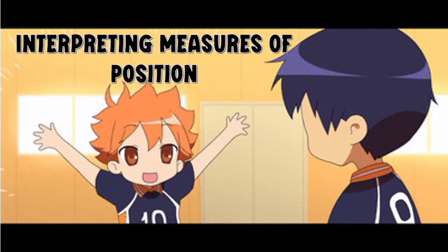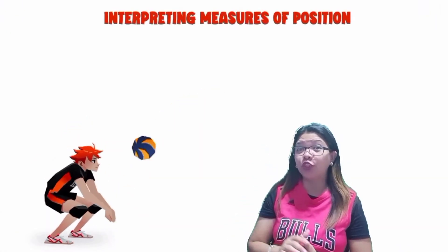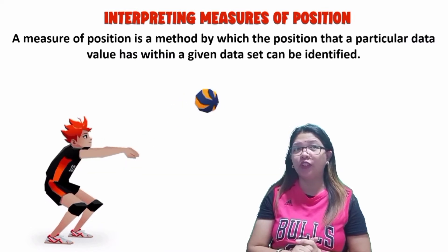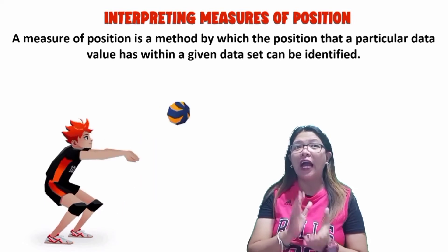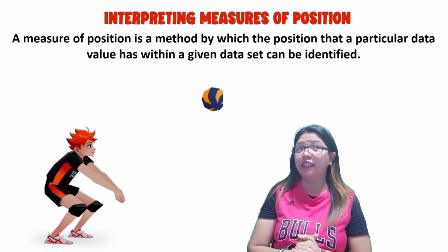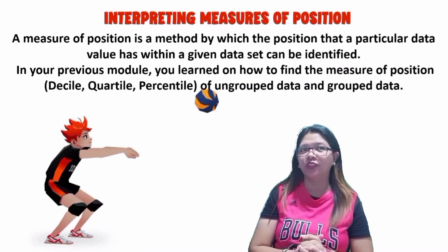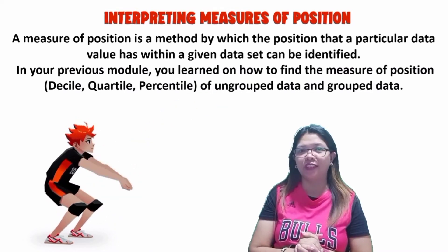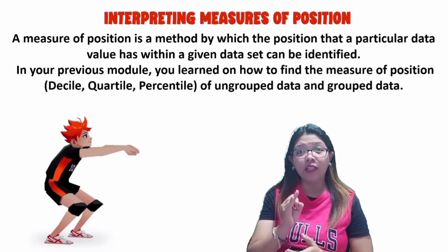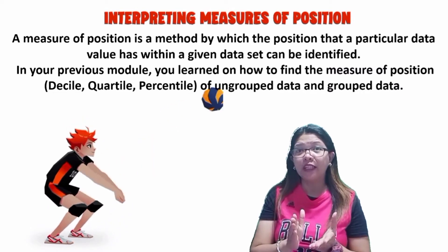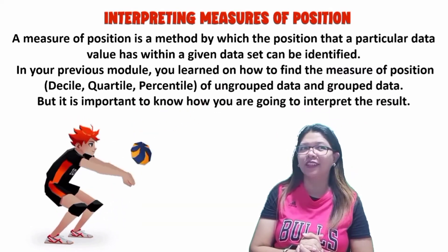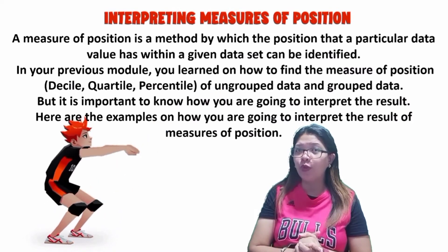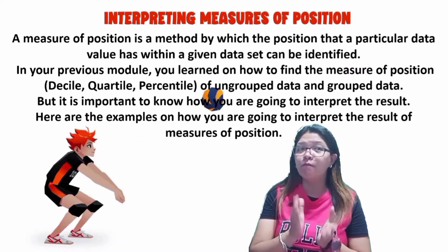Interpreting Measures of Position. A measure of position is a method by which the position that a particular data value has within a given set can be identified. In the previous module or video lesson, you learned how to find the measure of position — the decile, quartile, and the percentile — of ungrouped data and grouped data. But it is important to know how you are going to interpret the result. Here are the examples on how you are going to interpret the result of measures of position.